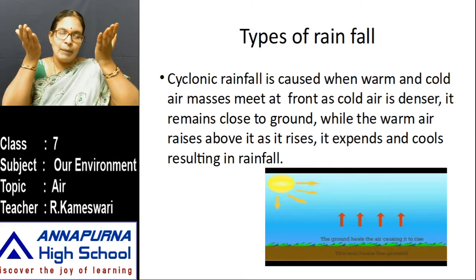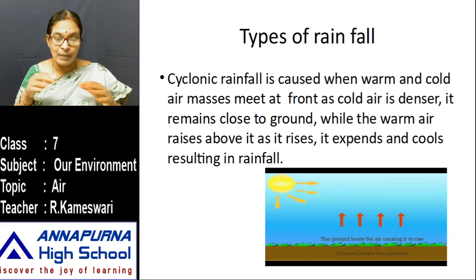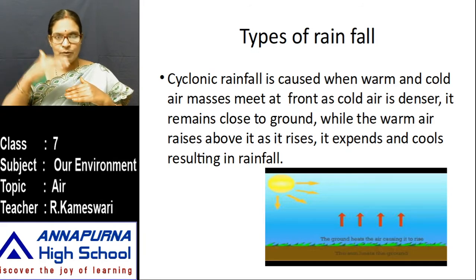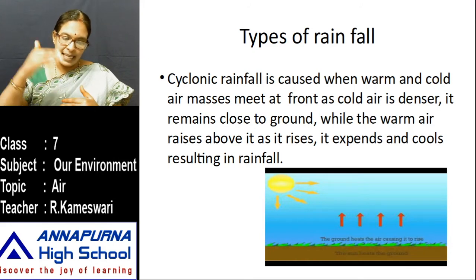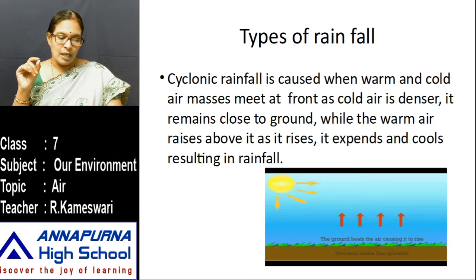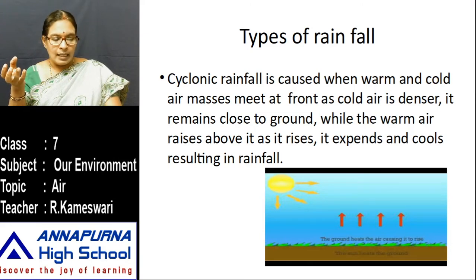When the water vapor rises up, it starts cooling. As you go to the top of a mountain, temperature decreases; if you go down, temperature increases. So when water vapor rises, it starts cooling and condenses, causing formation of droplets. Clouds are just masses of such water droplets. When these droplets become too heavy to float in the air, rain falls.